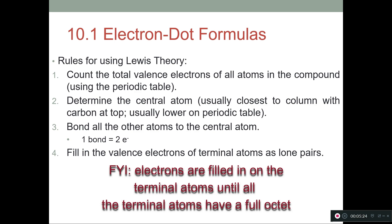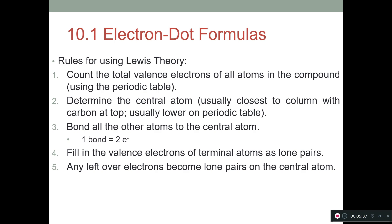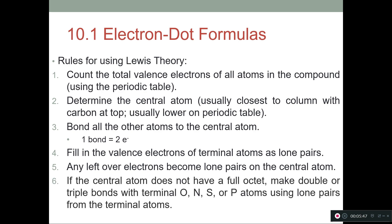Number four, fill in the valence electrons of the terminal atoms as lone pairs — do this on the terminal atoms, not the central atom yet. If there are any leftover electrons, put those as lone pairs on the central atom. If the central atom does not have a full octet, make double or triple bonds with the terminal oxygen or nitrogen — sometimes sulfur, very rarely phosphorus — using lone pairs from the terminal atoms.